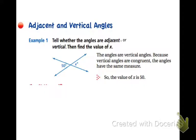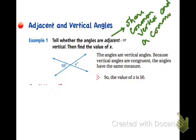The first concept is adjacent and vertical angles. You are asked in example 1 to tell whether the angles are adjacent or vertical and then find the value of x. So it might be important for us to define or review the meaning of adjacent and the meaning of vertical. Adjacent angles are angles with a common vertex. They share a common vertex and a common side. So adjacent angles are side by side.